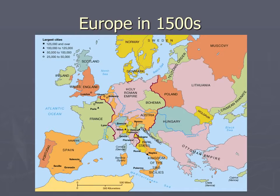What you hopefully see on the screen right now is a modern version of what Europe would have looked like in the 1500s. It's funny because the major powers at that time weren't what we would think of today. In fact, England and definitely Scotland definitely wouldn't have been the major powers before the 1500s, and Scotland won't be a major power for quite a while.